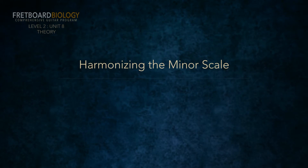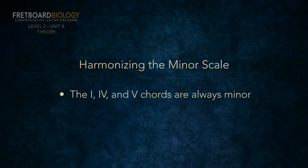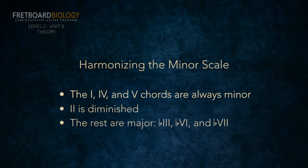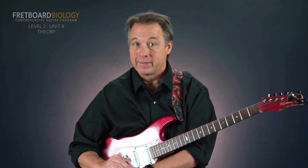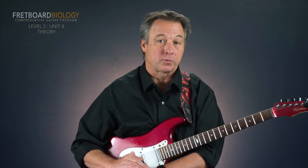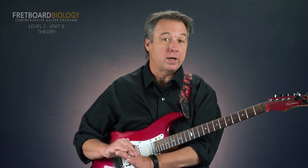Remember that in major, the one, four, and five chords are all major triads. In minor, the one, four, and five chords are all minor triads. Two is diminished, and the rest — the flat three, flat six, and flat seven chords — are major. Later in this unit, we'll be learning about harmonic analysis for chord progressions in minor keys, which is a really important skill used for understanding what to play when improvising, playing chords, or arranging in minor keys. To do this, we'll need to know what the chords are in all minor keys.